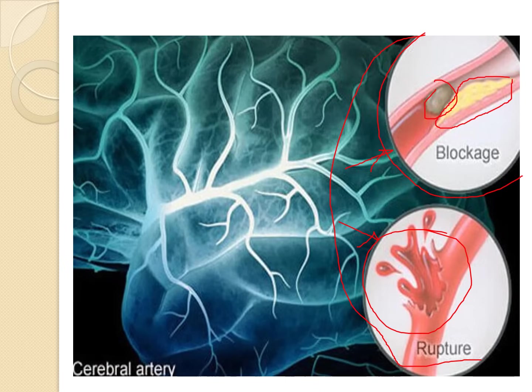Under embolic stroke, you have a clot, fat, or air bubble traveling through the blood vessel with a risk of lodging elsewhere. Both thrombotic stroke and emboli can block blood flow and increase the risk of stroke. The blockage shown in the diagram is the result of a thrombus or an embolus.